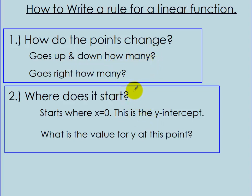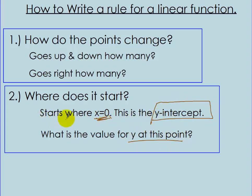The other thing you need to answer is: where does it start? When I say where it starts, I mean where is it when x equals 0 — what is the value for y at that point? We call that the y-intercept. You find where x equals 0 on the y-axis, and you tell me what the y value is at that point. Those are the two things you need to know.